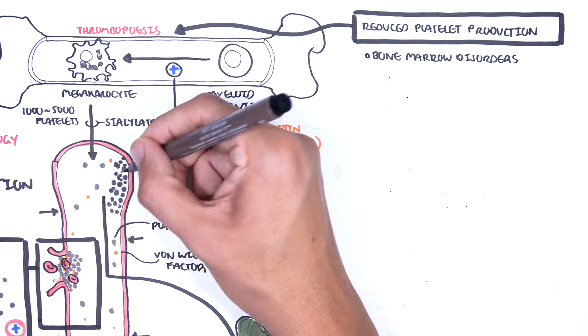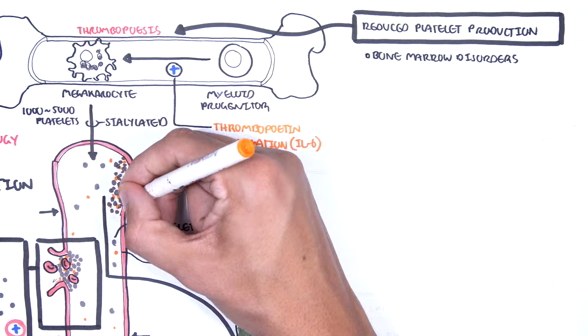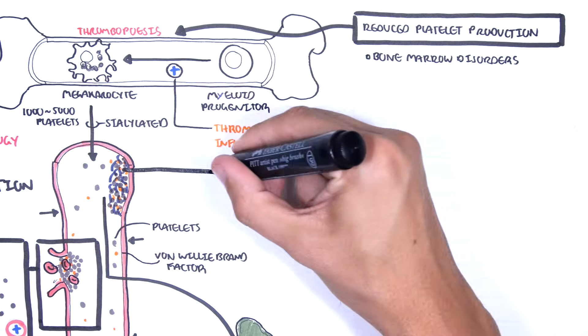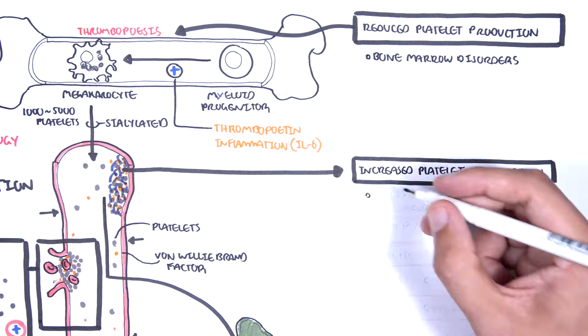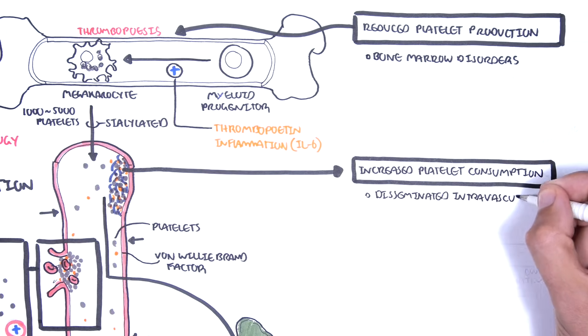Another cause of thrombocytopenia is where the platelets are all used up. This is called platelet consumption.